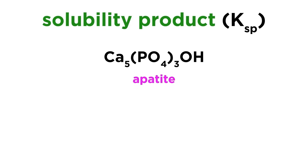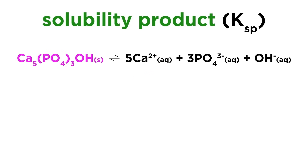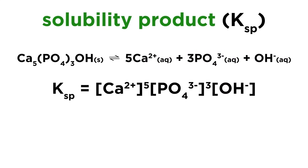If we have something like magnesium hydroxide, it's the same thing, except that dissociation produces one magnesium ion and two hydroxide ions, which means that hydroxide ion concentration will be squared in the solubility product expression. We can even do this for something more complicated, like apatite, which is a mineral. This will dissociate into five calcium ions, three phosphate ions, and a hydroxide ion. So the solubility product expression will look like this.